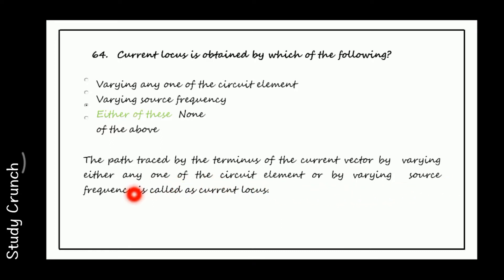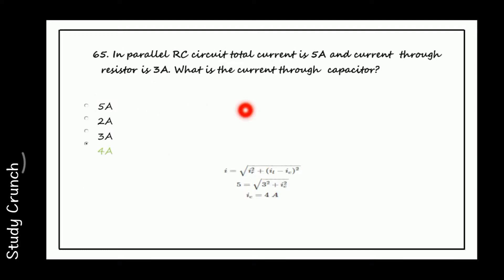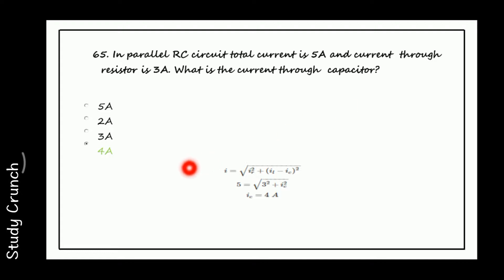Next, in a parallel RC circuit, the total current is 5 amperes and the current through the resistor is 3 amperes. What is the current through the capacitor? By the formula IR² plus (IL minus IC)², we get 4 amperes as the answer. So the answer will be 4 amperes.